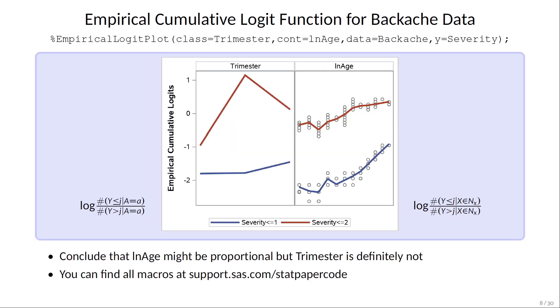You can compute the empirical cumulative logits for your response functions against each covariate individually, and the curves ought to be roughly parallel. Here, trimester fails miserably, but log of age looks fairly parallel so it can satisfy the proportional odds.